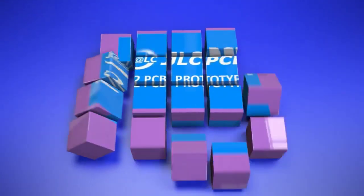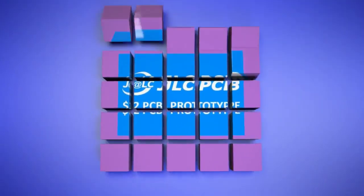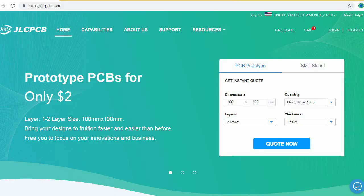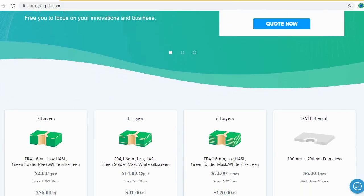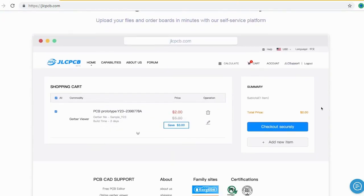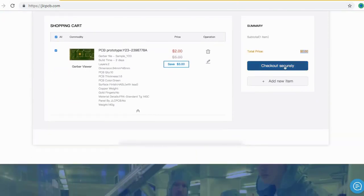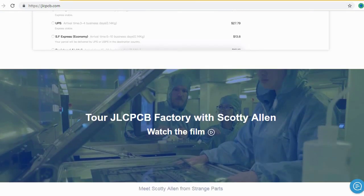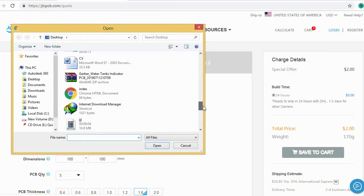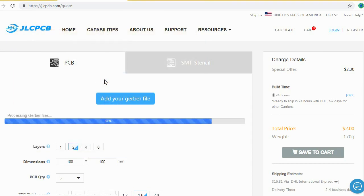JLCPCB is the largest PCB prototype enterprise in China and a high-tech manufacturer specializing in quick PCB prototype and small batch PCB production. Ordering PCB with JLCPCB is very easy and simple. You should just create your Gerber file and upload to JLCPCB. Here you can order your high-quality PCB at a very cheap price.